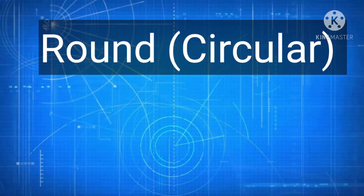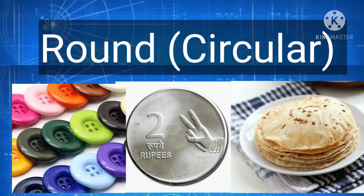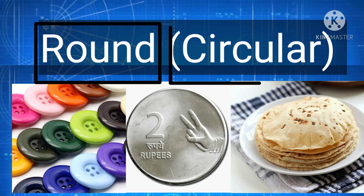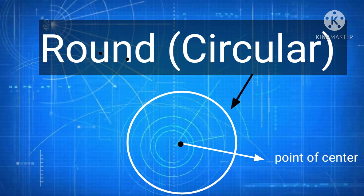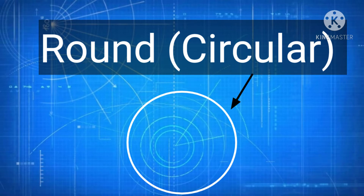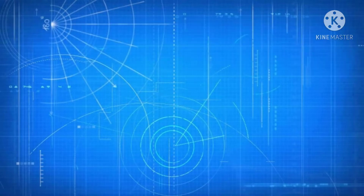Round-shaped objects are also called circular-shaped objects, but do you know there is a little bit of difference between these two terms? If I don't know about the center point, then that shape is called a round shape. If I know where the center point is, then that shape is definitely called a circle. The next thing to differentiate these two terms is the shape itself.